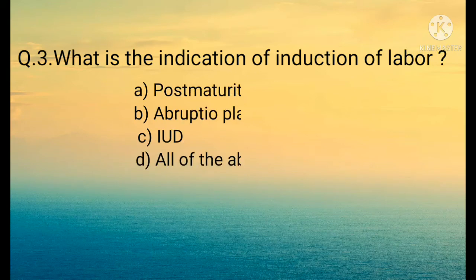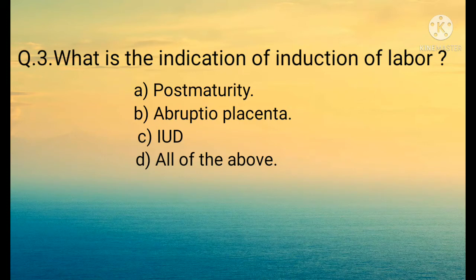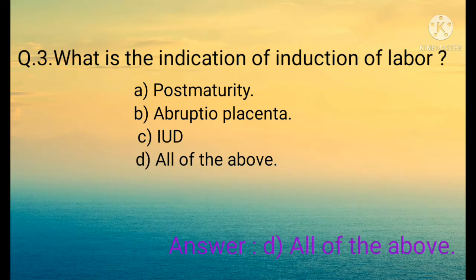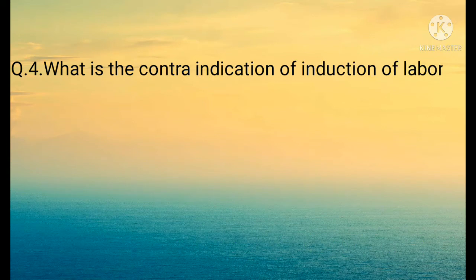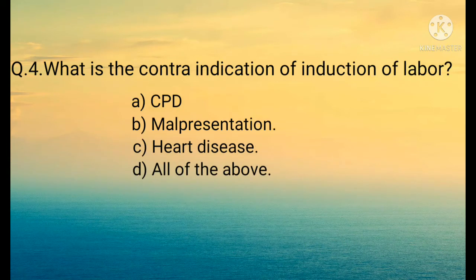Question number three: What is the indication of induction of labor? Option A: Post-maturity, Option B: Abruptio placentae, Option C: IUD (intrauterine death), Option D: All of the above. The correct option is Option D: All of the above.